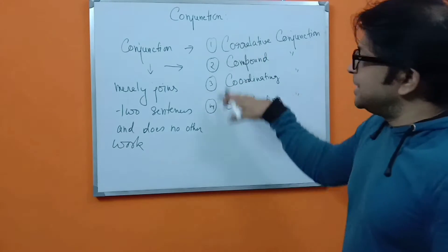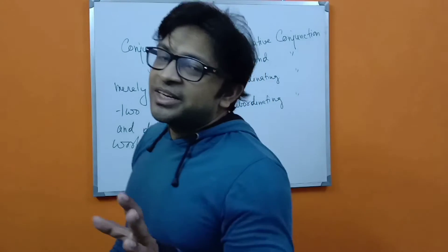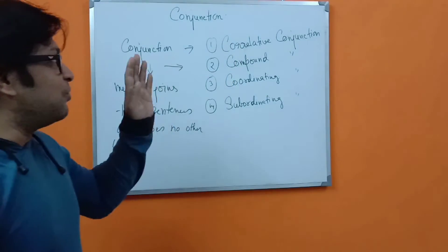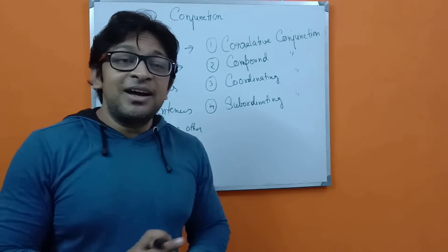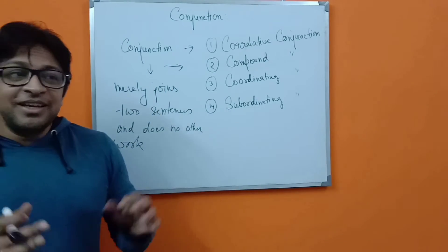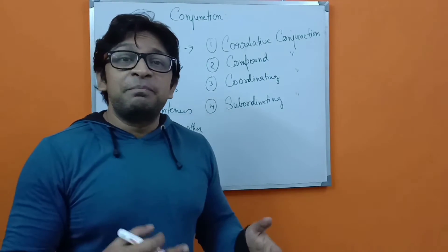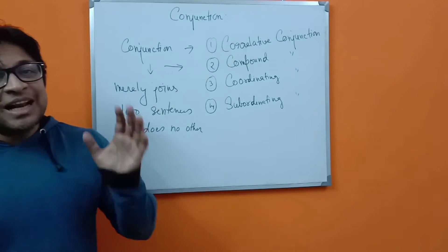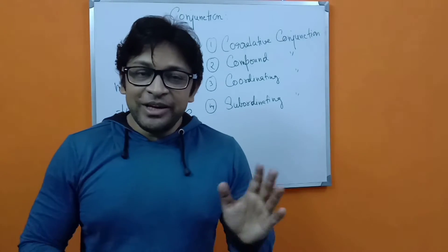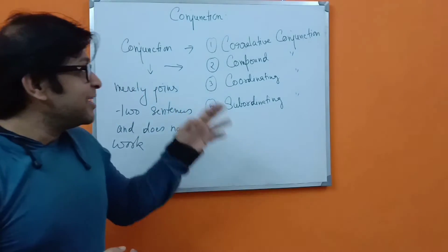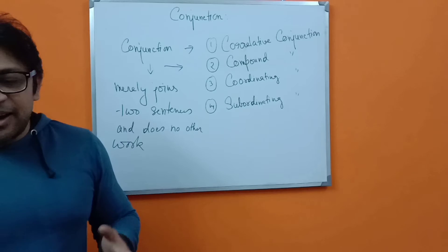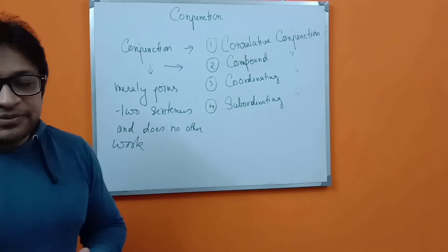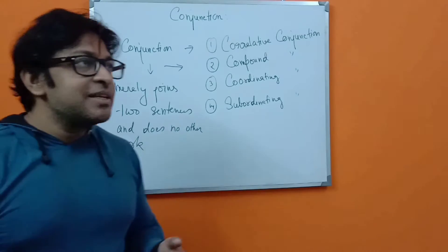Correlative conjunctions are conjunctions that come in a pair — neither/nor, either/or, not only/but also. These are examples of correlative conjunctions. Compound conjunctions include phrases like: on condition that, even if, so that, as if. These are compound conjunctions and I will give you examples of each.